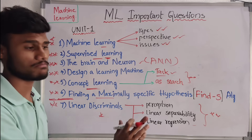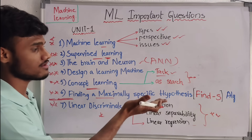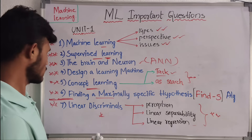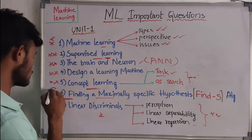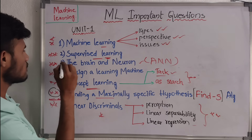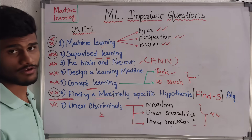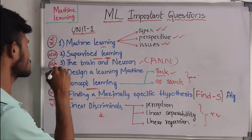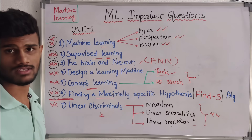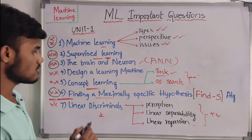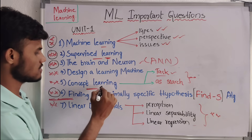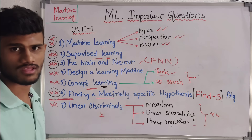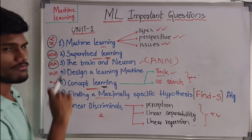So, this topic is going to be discussed. If you want to focus on questions, find this algorithm, types and issues, perspectives of machine learning, supervised learning, and neural networks — first focus on these four questions, then go to next other questions. Maximum, conceptual learning may come to just two marks. So mainly focus on these four topics.